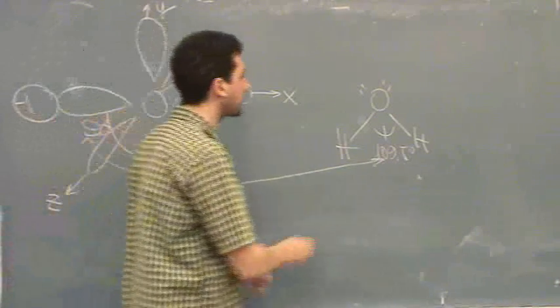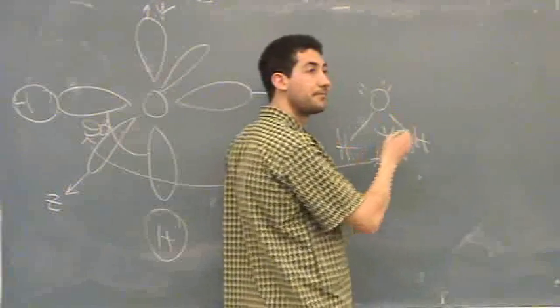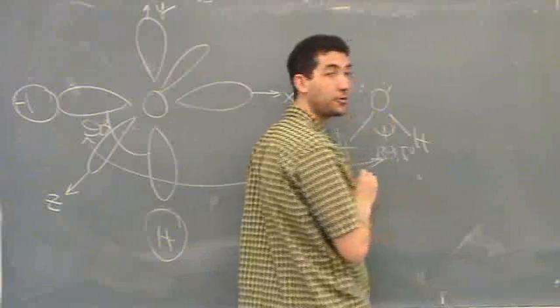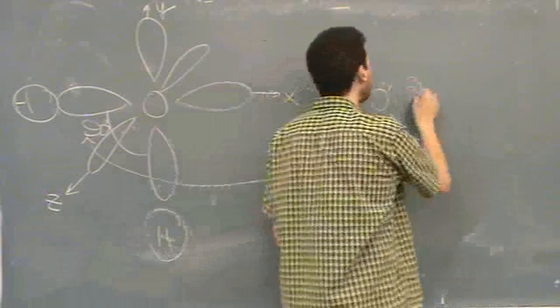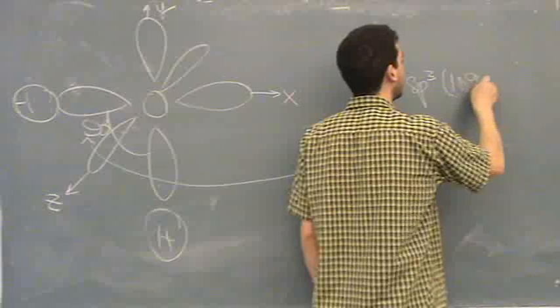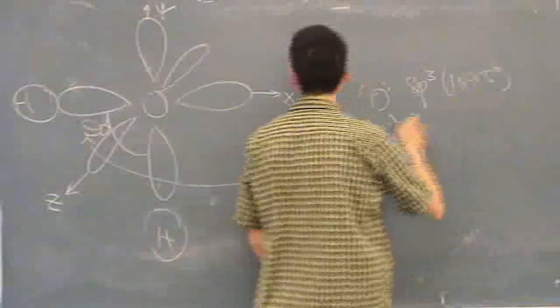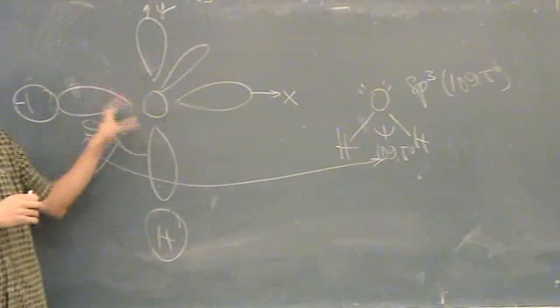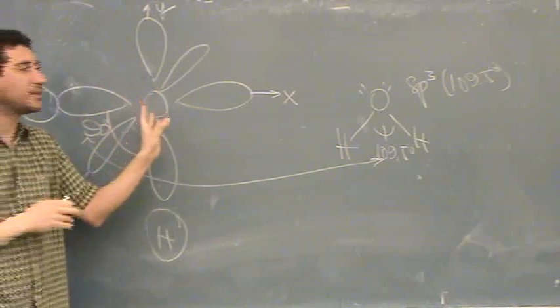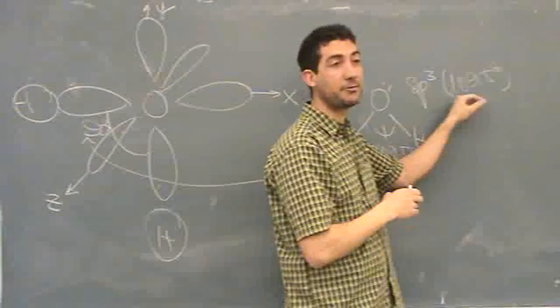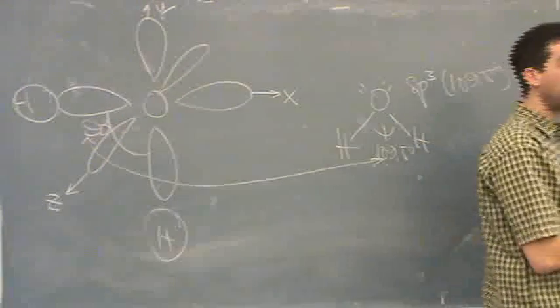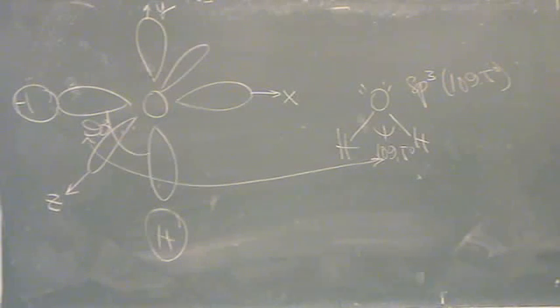This oxygen is actually what hybridization? With four groups. sp3. sp3, which has the 109.5 bond angle. So actually what we're saying is that S orbital here and three of the p's stir up together. And when that happens mathematically, we get this 109.5. We don't go through that derivation. I just tell you that that's true.